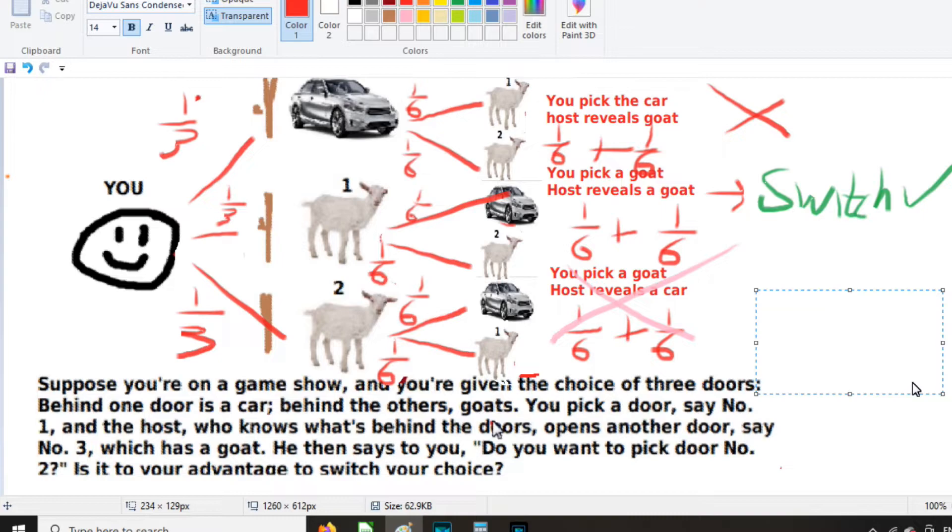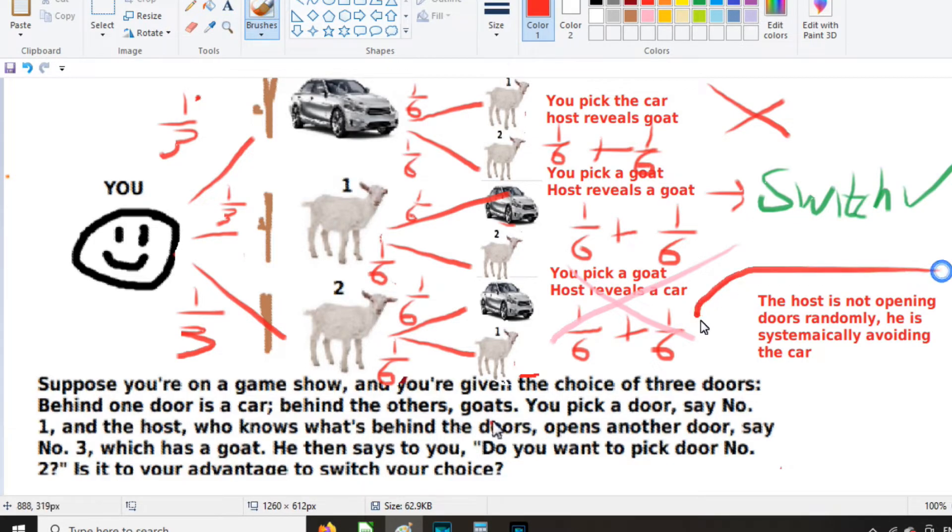This is the big thing that they're leaving out, which is the host is not opening doors randomly. He is systematically avoiding the car. That is the big part of the problem that needs to be in here, but isn't. When we do this, this will change the odds, and then the popular version of the Monty Hall paradox will be true.